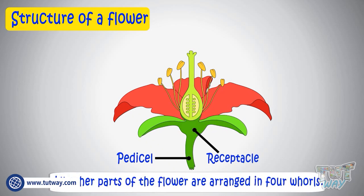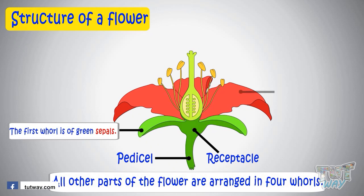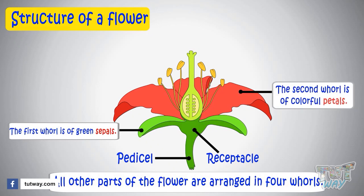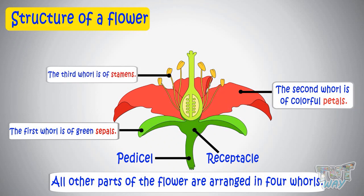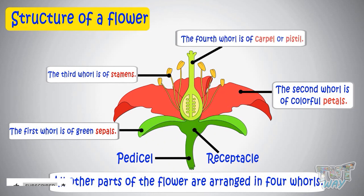The first whorl is of green sepals, the second is colorful petals, the third is stamens which is the male reproductive part, and the fourth is the carpel or pistil, which is the female reproductive part.